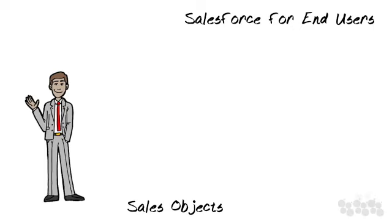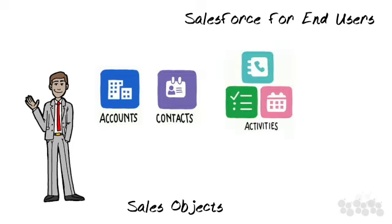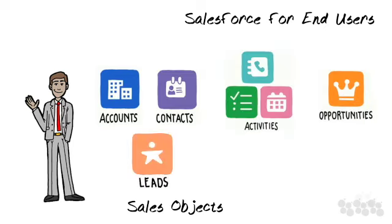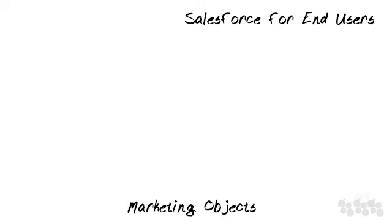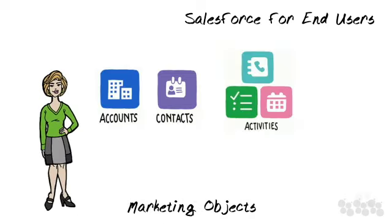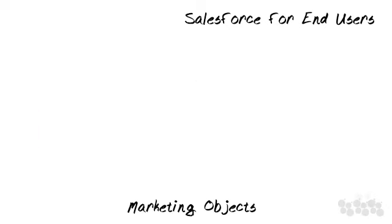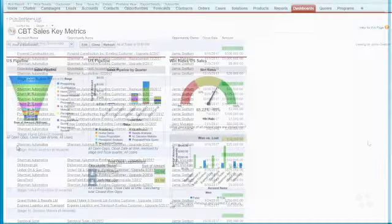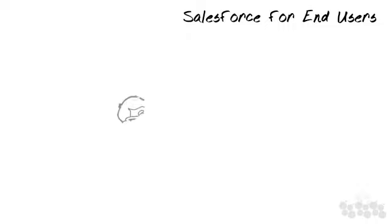For example, if you are in a sales, sales support, or account management role, the features you use most will be found in Salesforce objects: accounts, contacts, activities, and opportunities — plus leads. If you are in a marketing role, you will also use accounts, contacts, activities, plus campaigns and leads. Salesforce also has a robust report feature to allow you to review aggregate data about your customers.